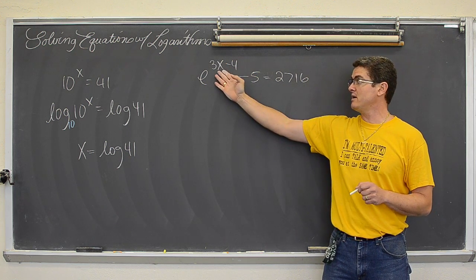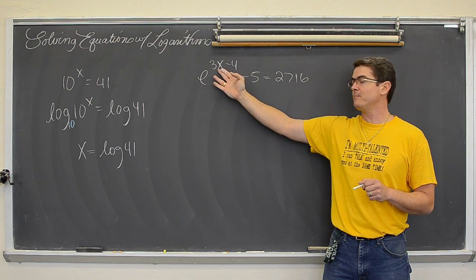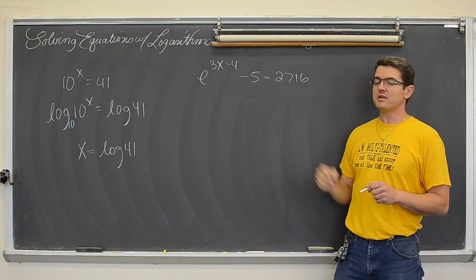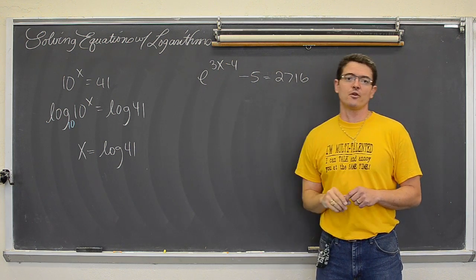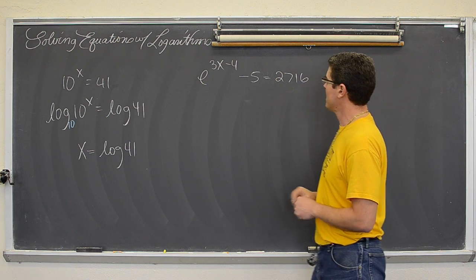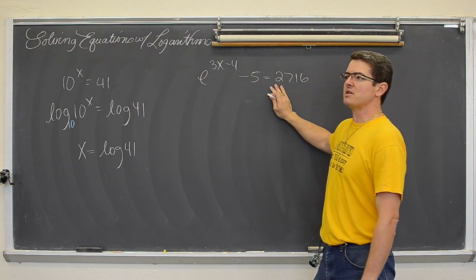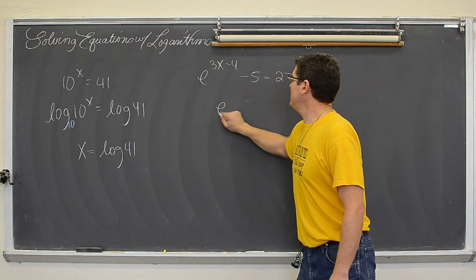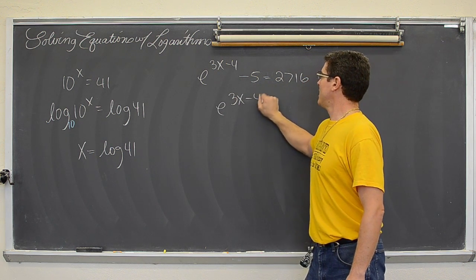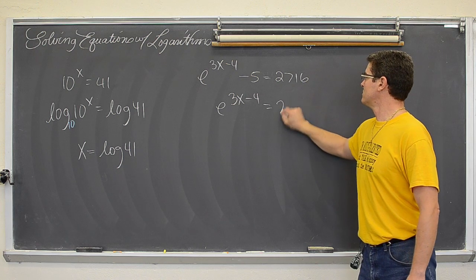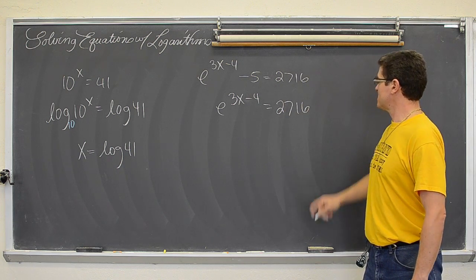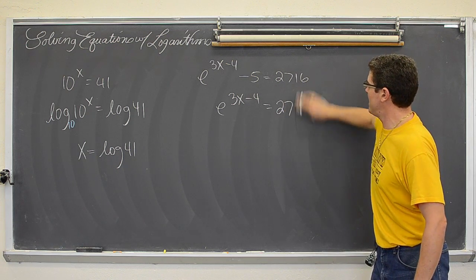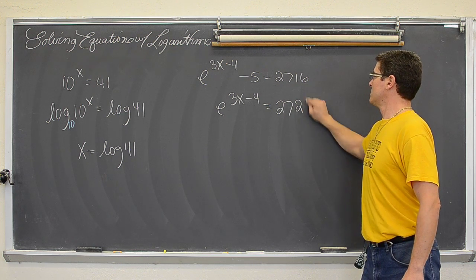You should not be attempting to apply the log to both sides of the equation until the term with the variable in the exponent is isolated. So before I try and get this x out of the exponent, I am going to move the 5 over with addition and isolate that term with the variable in the exponent once again. So we are going to add 5 to both sides and get e to the 3x minus 4 equals 2716 plus 5 is 2721.